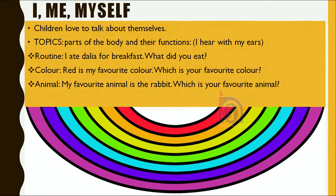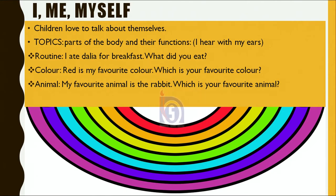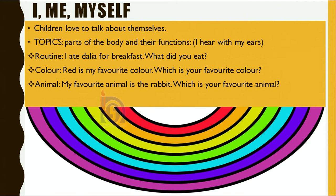I, me and myself are three topics which most of us love to talk about. Children, of course, love to talk about themselves. Topics in that I, me and myself category would be parts of my body and their functions — like I hear with my ears — or a routine: I ate dalia for breakfast, what did you eat, Rohan? Or colors: you show them a color band and say, my favorite color is red, which is your favorite color, Rohan? Or what about animals? My favorite animal is the rabbit. Do you have a favorite animal? Which is yours?